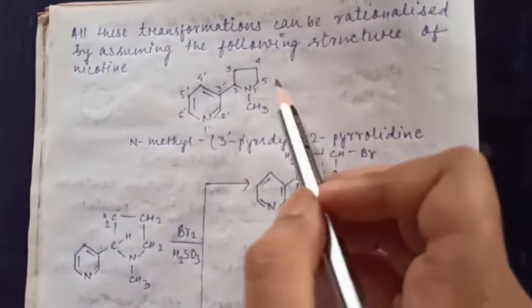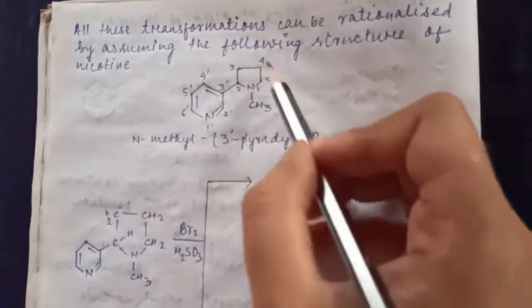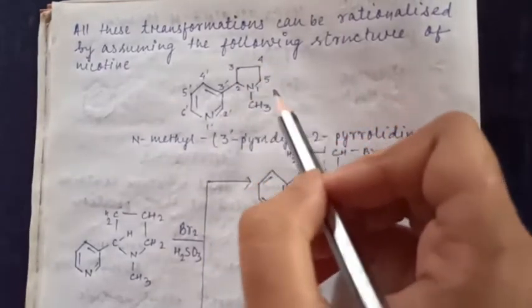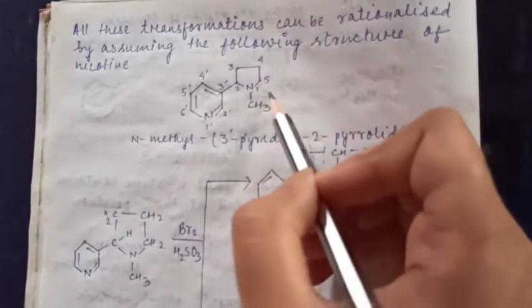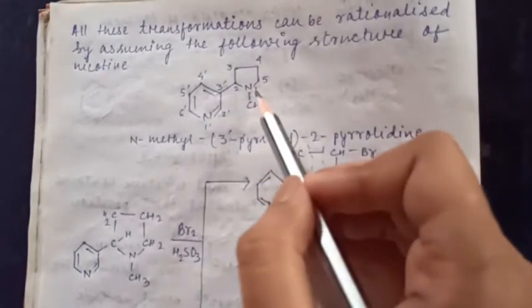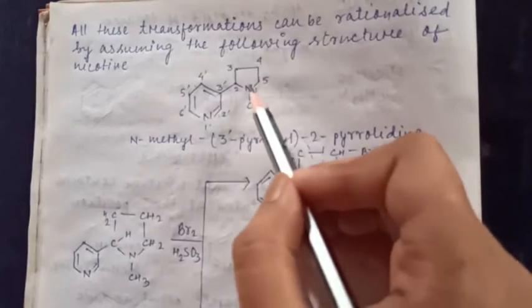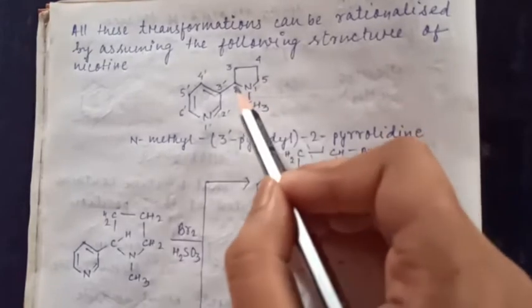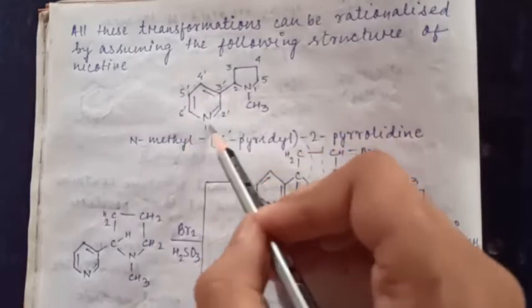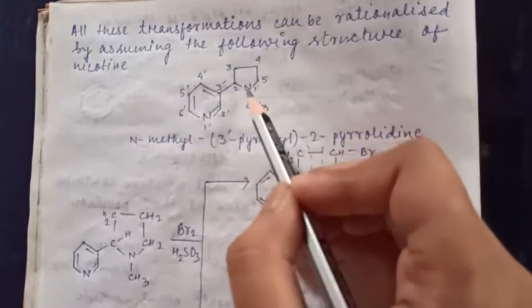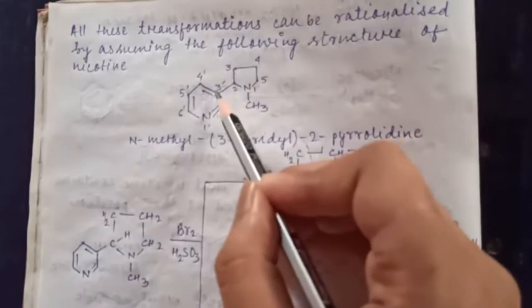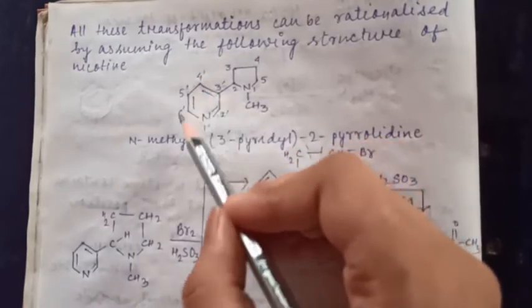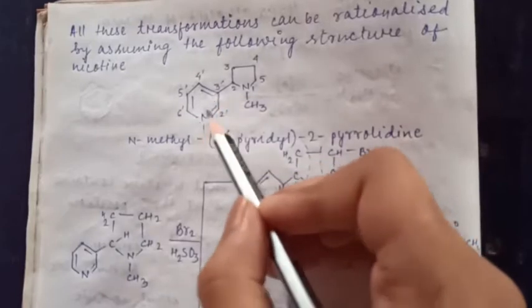So its name will be: this ring, five-membered ring with nitrogen and one methyl is pyrolidine. So what will be its name? N-methyl - and this is substitution. This part, its substitution. So what will be? N-methyl - what is the name of N-methyl? Three-prime pyridyl. This is called three-prime pyridyl.